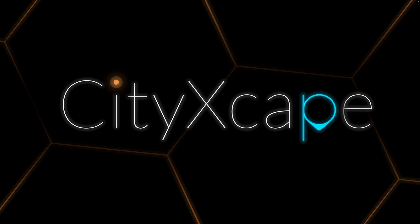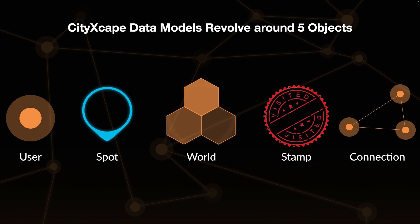We're looking at the presentation covering the data models. After a cover page showing the Cityscape logo, the first slide shows the five major objects the data models revolve around: a model for the User, a model for Locations (Spots), a model for Worlds, a model for Stamps, and a model for Connections. These five objects or data models are used interchangeably, and we're working within object-oriented programming.